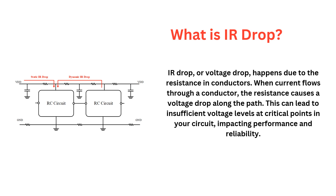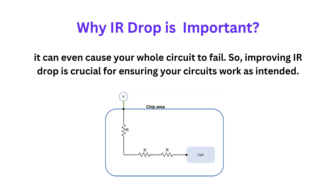Why is IR drop important? Why should we care about IR drop? In high-speed digital and analog systems, even a small voltage drop can cause significant issues. Components may not receive adequate voltage, leading to malfunction or degraded performance. In extreme cases, it can even cause your whole circuit to fail. So improving IR drop is crucial for ensuring your circuit works as intended.